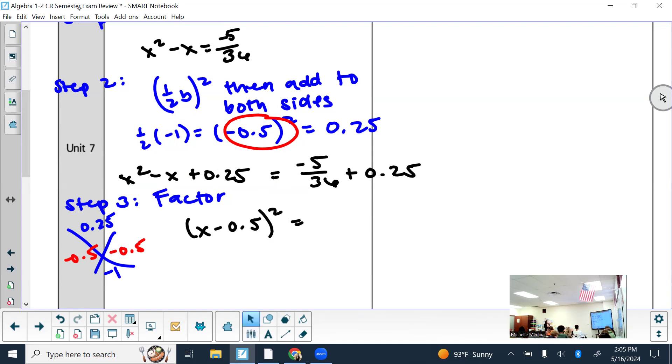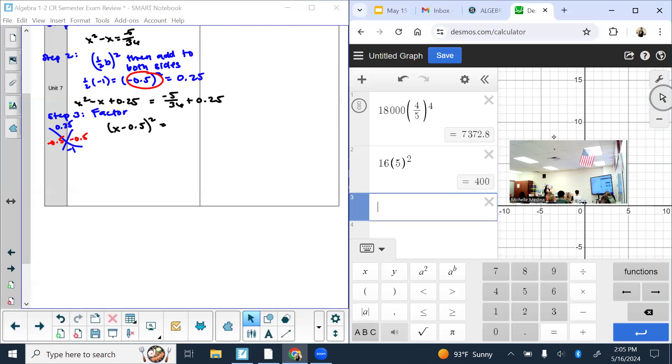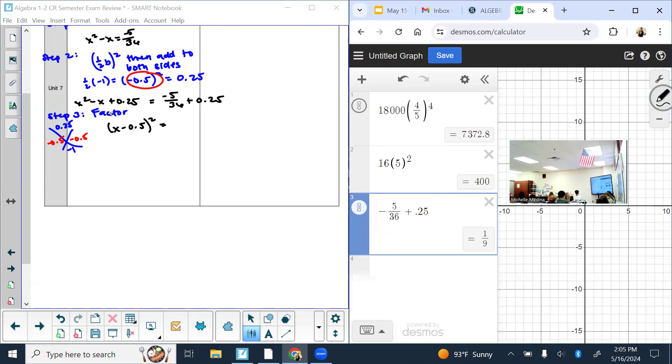So that's easier to solve for x. I still need to simplify the right side, so that's going to be with a calculator. Negative 5/36 plus 0.25, press the fraction to decimal button. I don't want to have to round too early or I won't get the right answer. So press this button and get 1/9. So it's me factoring the left side: (x - 0.5)^2 = 1/9.